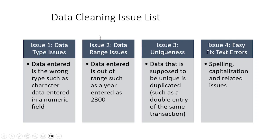Issue two is data range. This can happen when you ask for a date and somebody enters a year like 2300 when they meant 2023. You could also ask for age and somebody responds that they're 210 years old instead of 21 because they accidentally typed an extra zero. You can detect range issues by doing min and max checks and looking at frequencies.